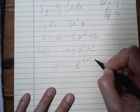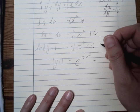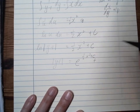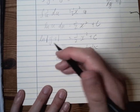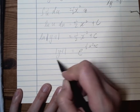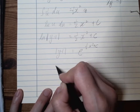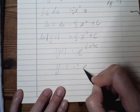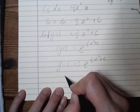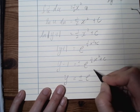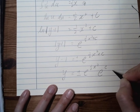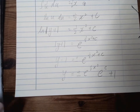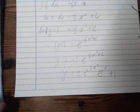Then we exponentiate both sides: |y minus 1| equals e to the power of (one half x squared plus c). Because of the modulus we get plus or minus, so y equals plus or minus e^c times e^(one half x squared) plus 1. That is our general solution — we do not have an initial value, so we stop there.